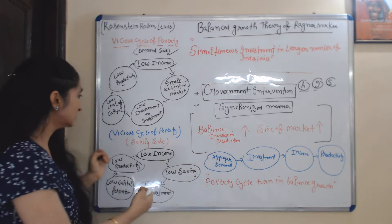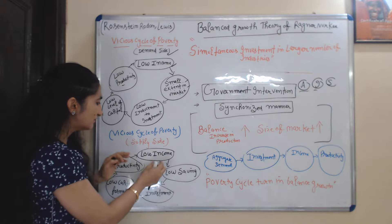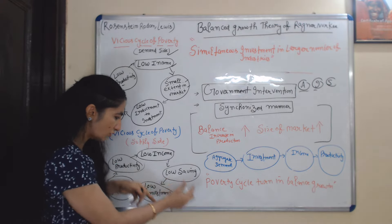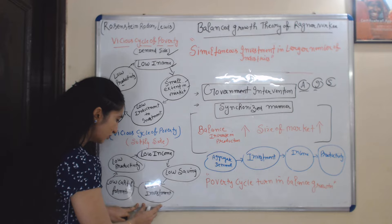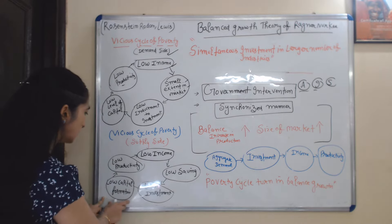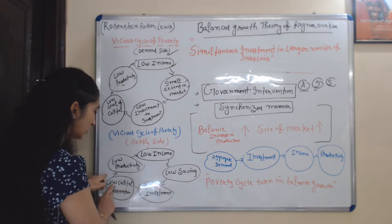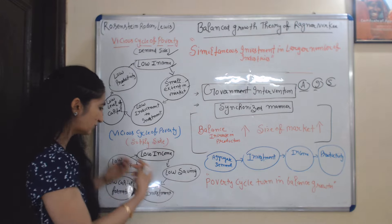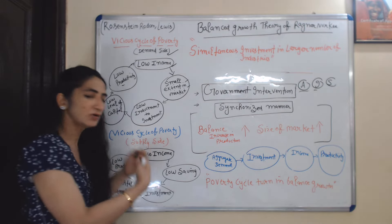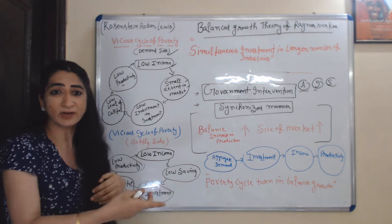On the other hand, the vicious cycle on the supply side means low income leads to low saving. Low saving leads to low investment. Low investment leads to low capital formation. And low capital formation results in low productivity, which leads to low income again — and it will continuously run.